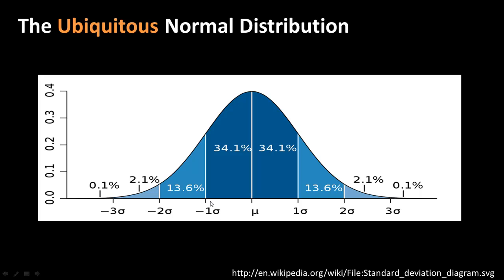Similarly, 13.6% of values will be between mu minus 1 sigma and mu minus 2 sigma, and another 13.6% between mu plus 1 sigma and mu plus 2 sigma. So in total, 68.2 plus 27.2 gives almost 95% of values within 2 sigma of the mean. Only 0.2% of values will be more than 3 sigma above or below the mean — 0.1% on each side.